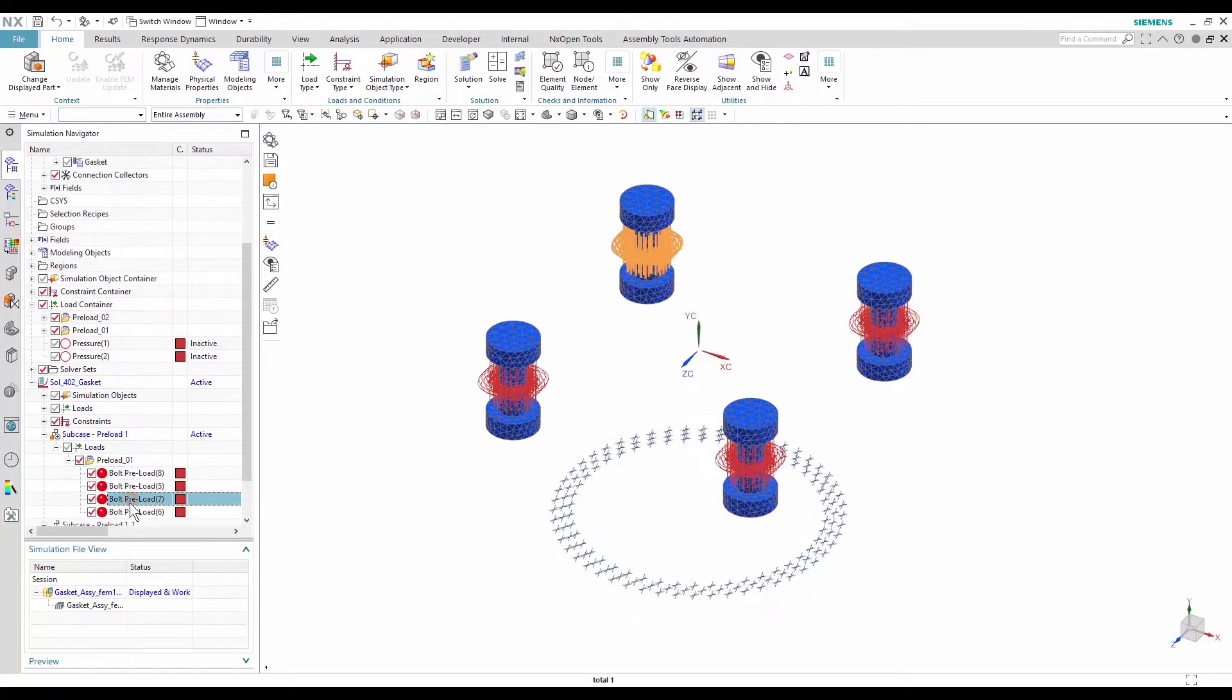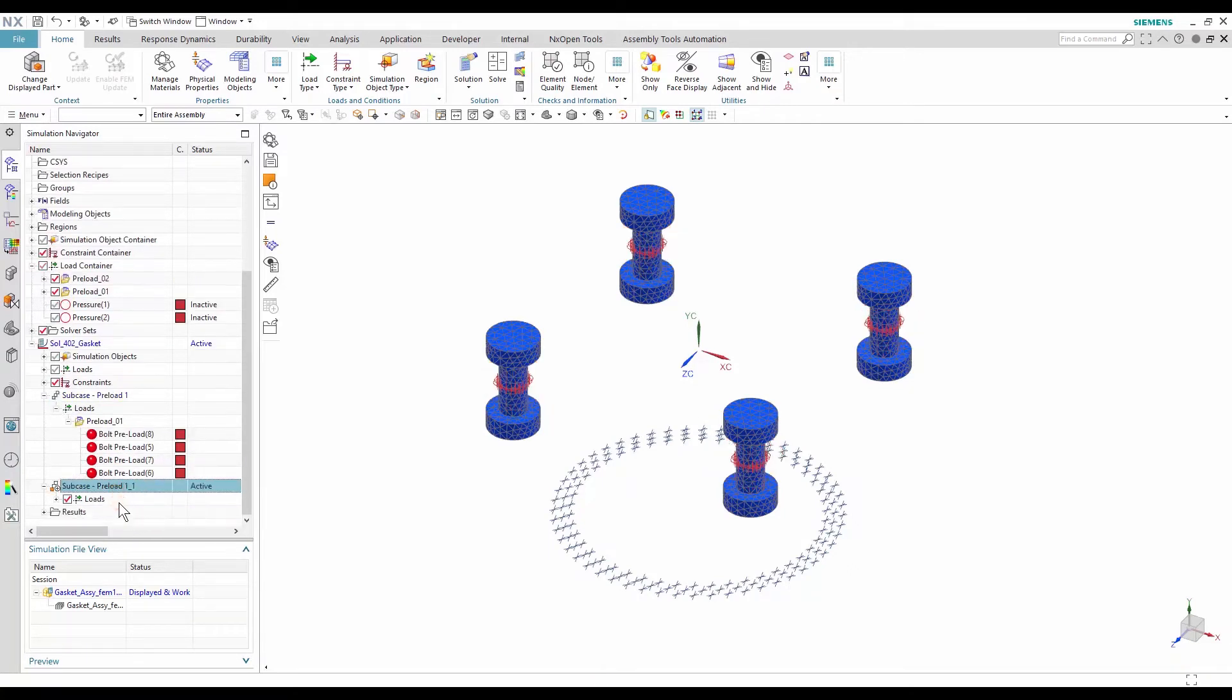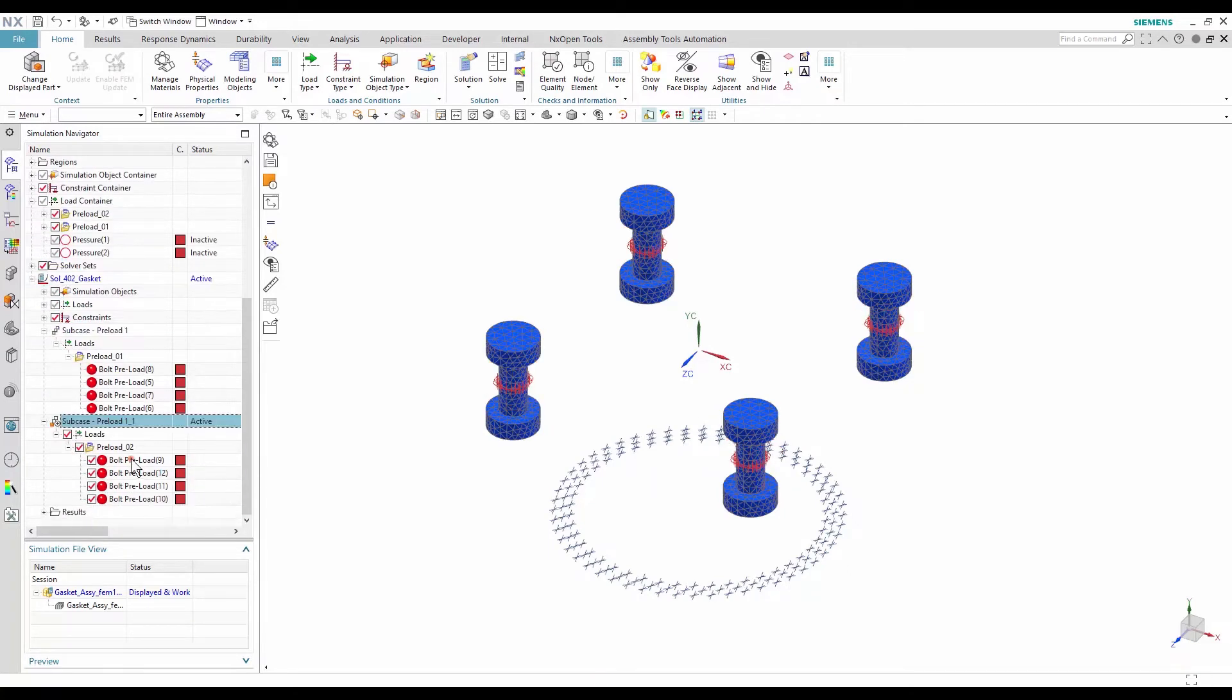In the first subcase, all the bolt preloads are equal. In the second subcase, one of the bolts has a higher preload than the others. If you wish to see how I define the bolt preloads, you can look at this tutorial video.